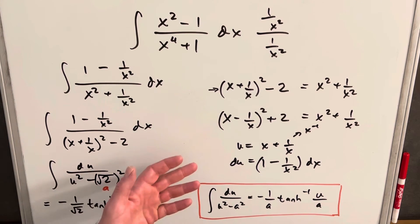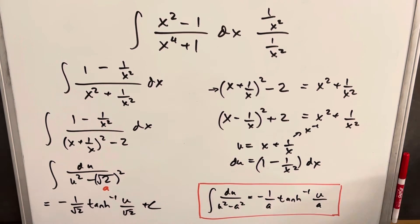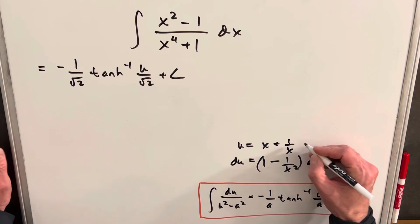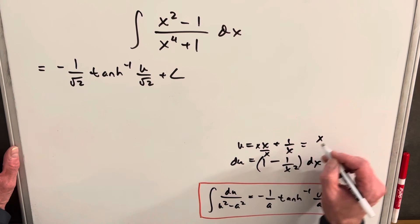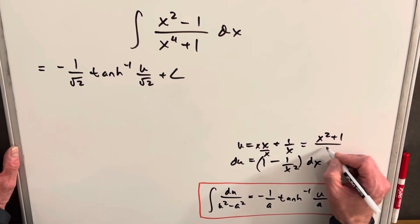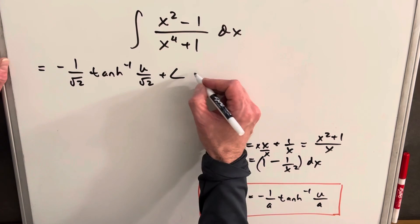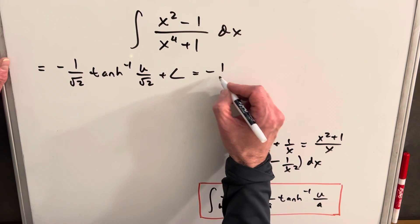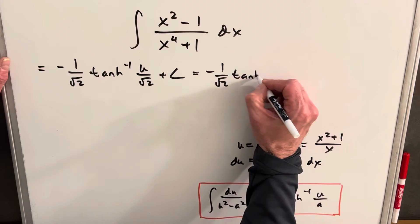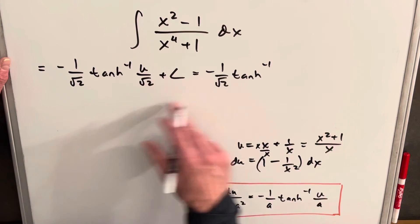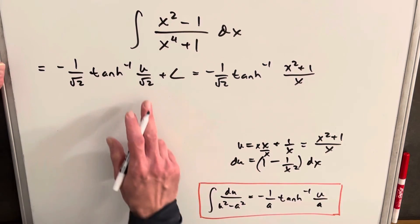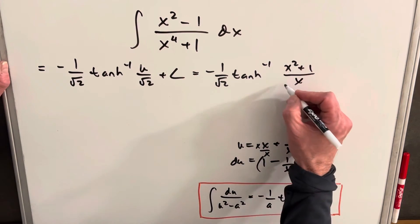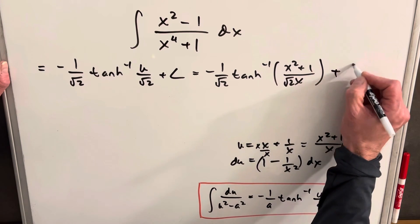Now I just need to back-substitute. First, I'll rewrite u with a common denominator: x plus 1 over x becomes x squared plus 1 over x. Bringing it all back, the final answer is minus 1 over the square root of 2 times the inverse hyperbolic tangent of x squared plus 1 over x, all divided by the square root of 2, plus C.